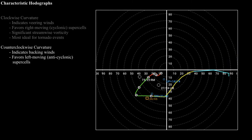Counterclockwise curvature is something that's not as widely discussed, but it's something you can get in the atmosphere. If you've got any counterclockwise curvature in a hodograph, that means you've got winds that are turning counterclockwise with height, which indicates a layer of backing winds. Usually if you've got a layer of backing winds, that means you've got cold air advection.